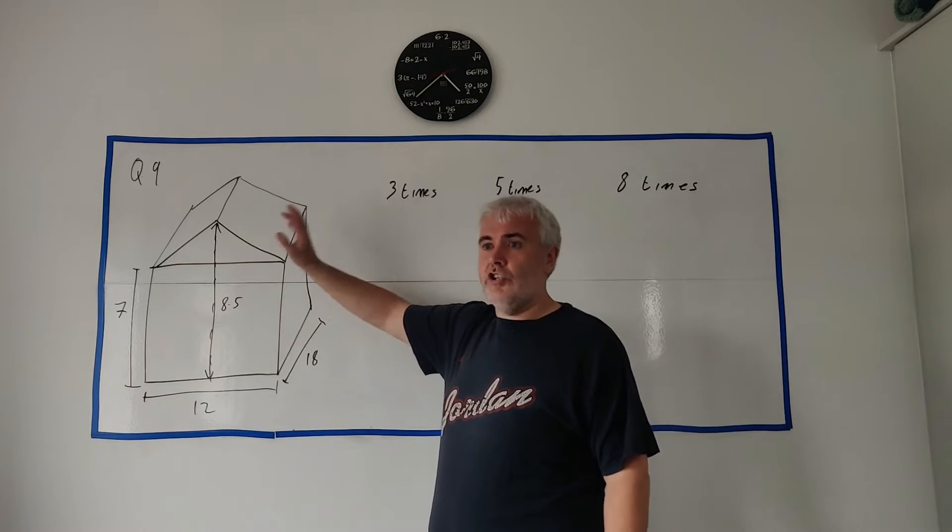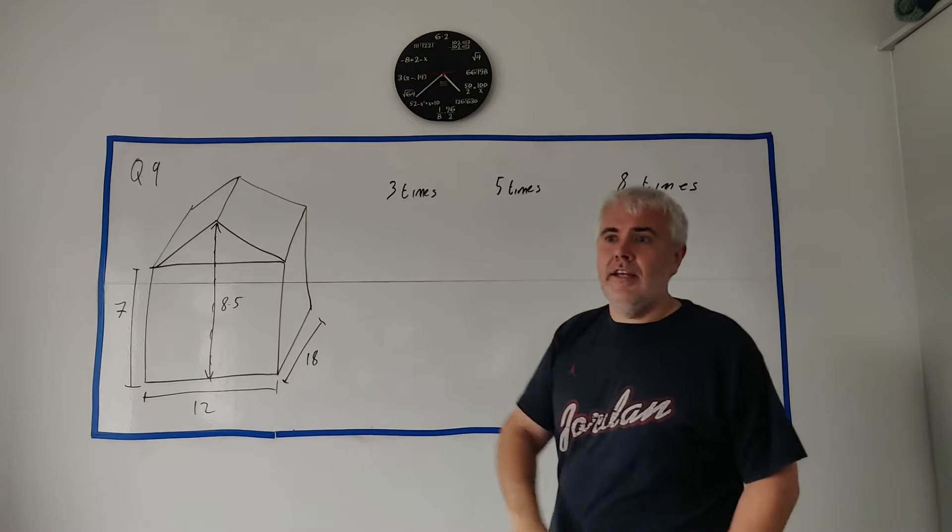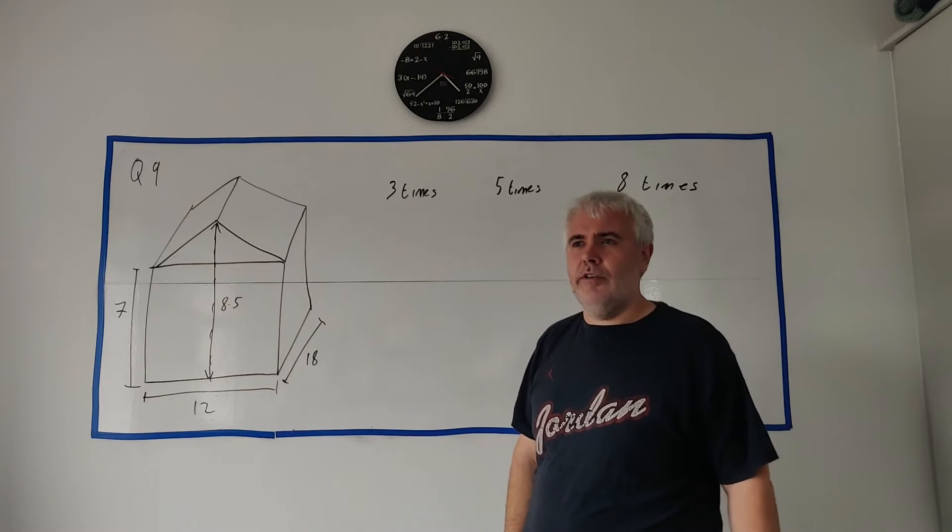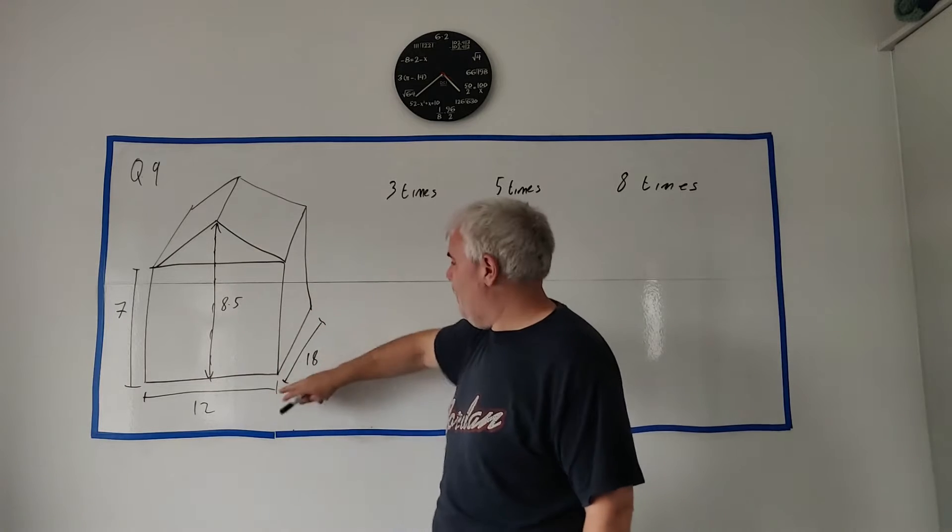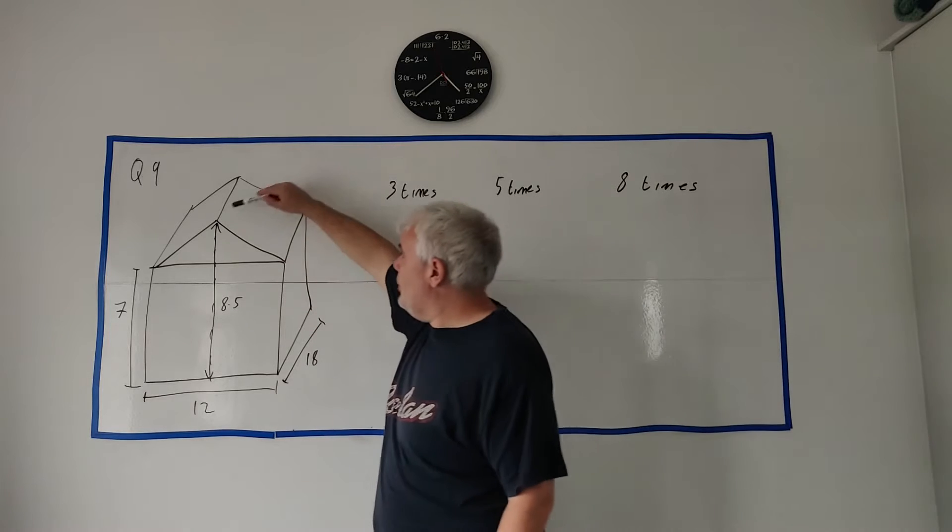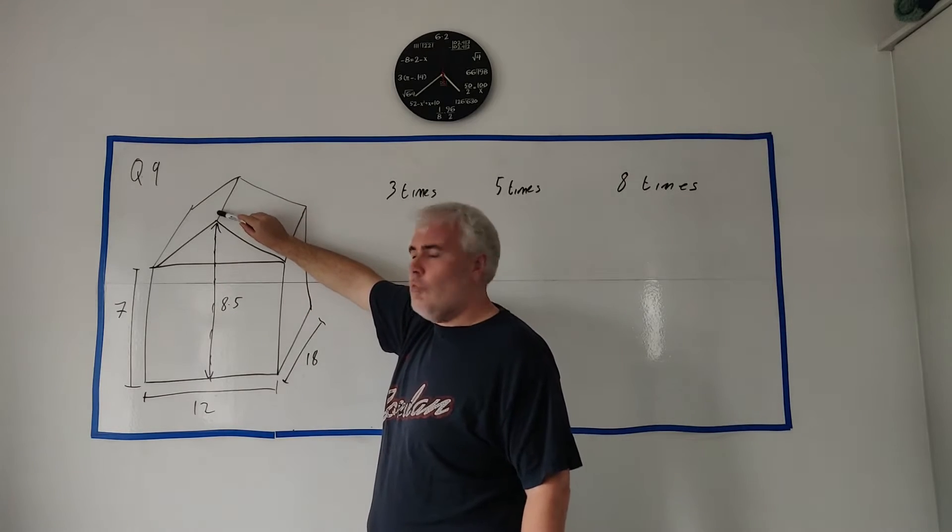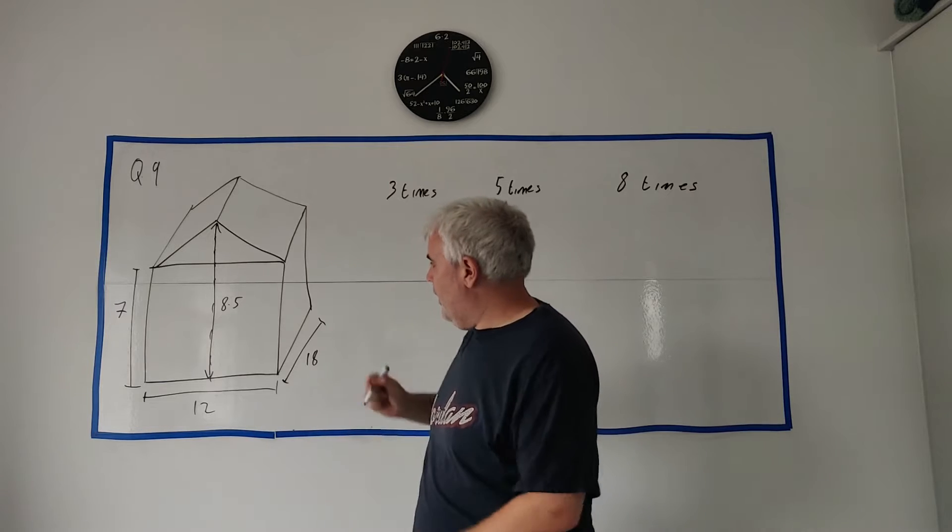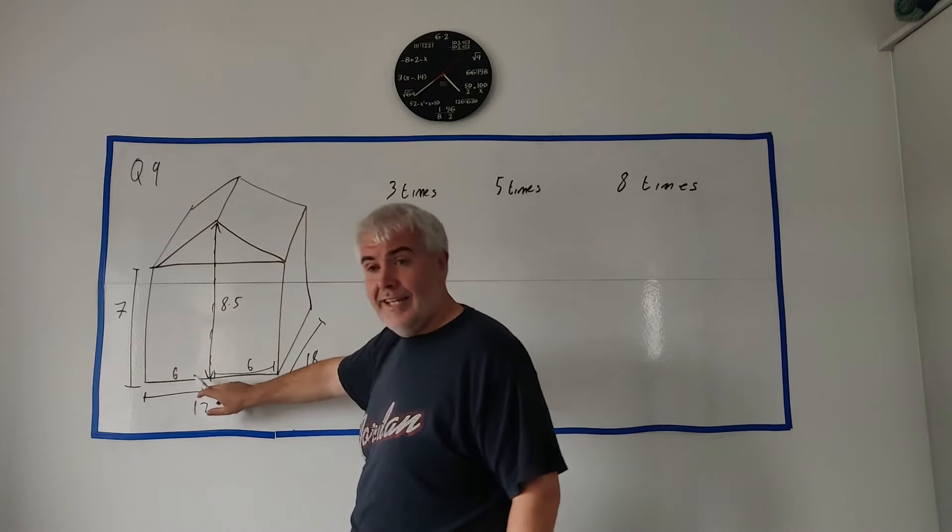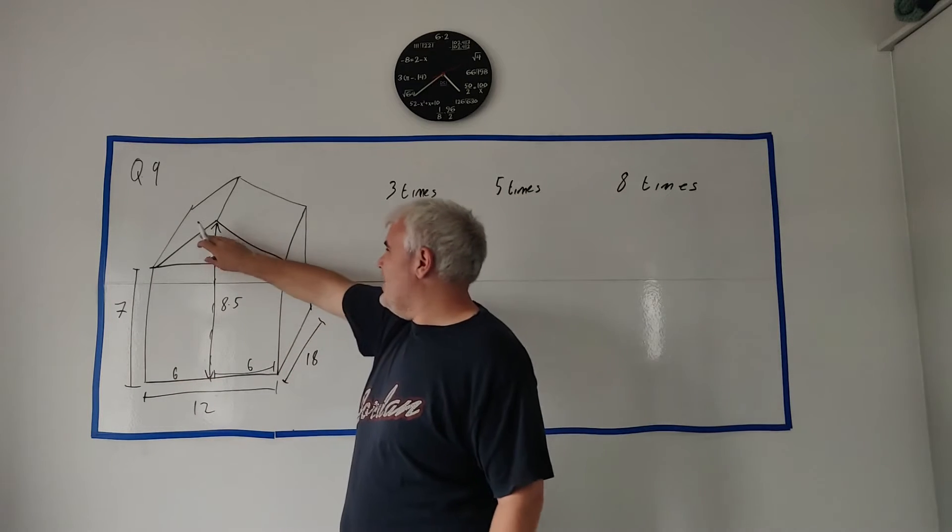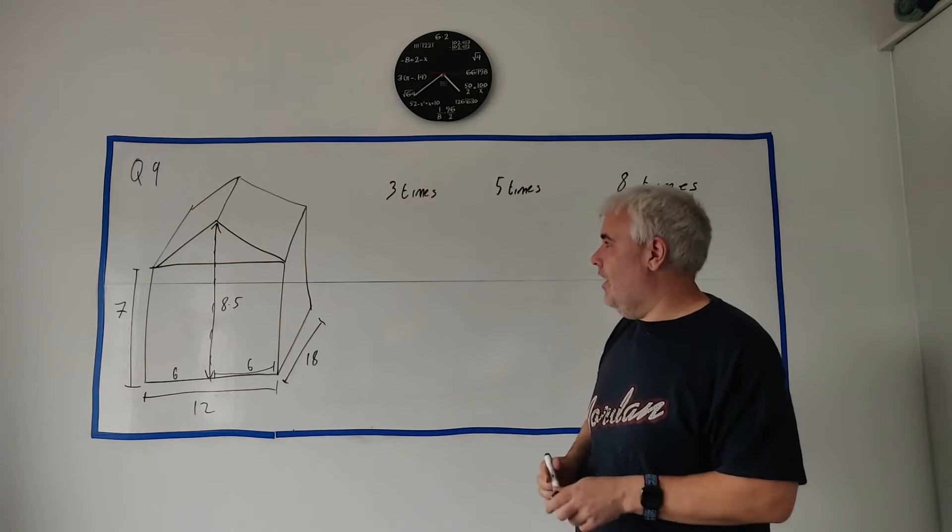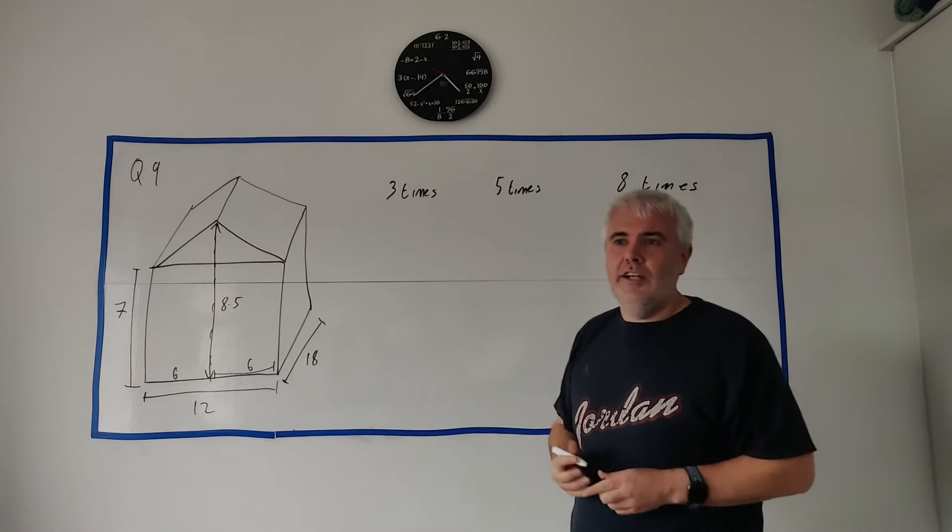This story is somebody called Sean built a shed. They give us all these numbers for a shed. A couple of things they tell us that are important: a rectangle on the bottom, that means these are all right angles. And they tell us the highest point, this point here, is directly over the middle. That's very important, it's going to be an important layer. That means this is 6 and 6, it's exactly in the middle. And that means this is an isosceles triangle.